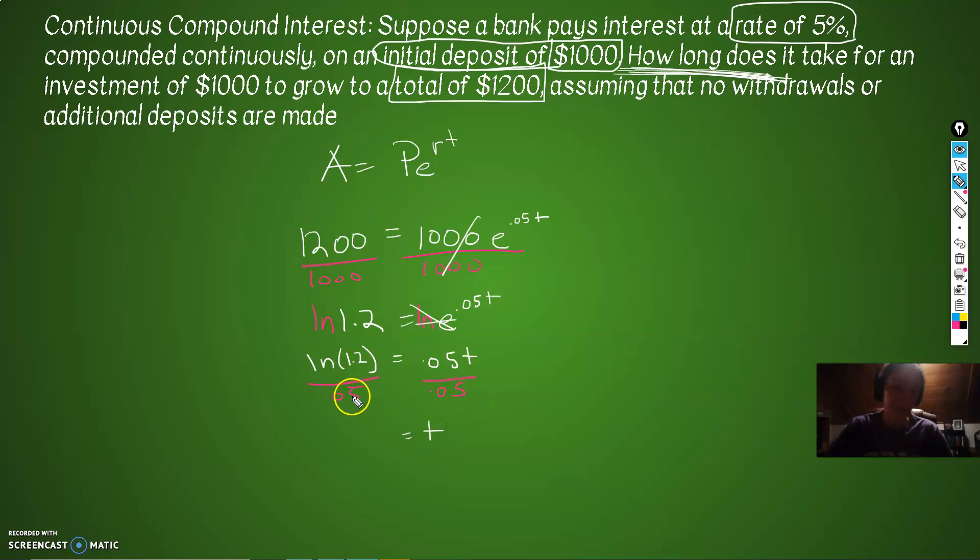Okay, what is LN of 1.2 divided by 0.05? LN of 1.2 divided by 0.05. That is 3.64. Okay, now let's look at it again. What the heck are we even trying to figure out? Does this answer make sense?